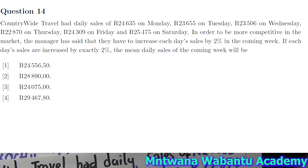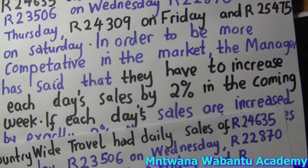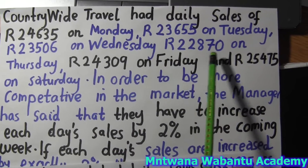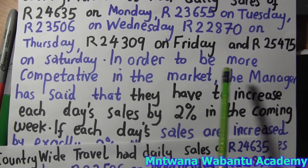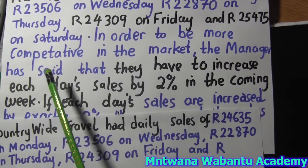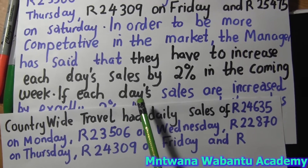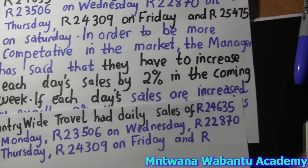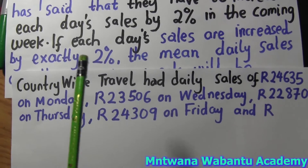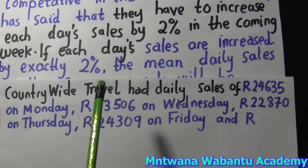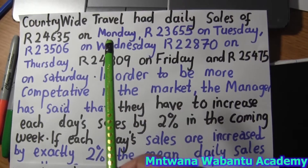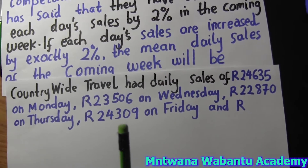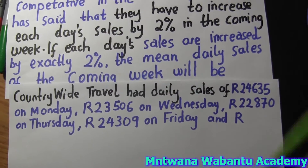Let's get started. The first question is about countrywide travel — how the daily sales of this one here, which is $2, $4, $6, $3, $5 for Monday. They also give Tuesday as $2, $3, $3, and Wednesday through Saturday. In order to be more competitive in the market, the manager decided to increase each day's sales by 2% because it's not too much. So we have to increase by 2% in the coming week.